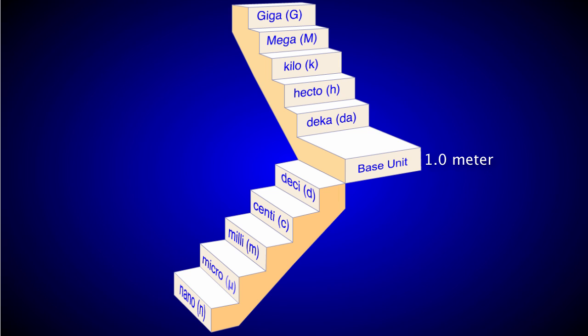Notice that each step has a specific prefix. Each of these prefixes can be associated with a specific number. For example, the prefix deca means 10. So a decameter will be equal to 10 meters. As you move up the metric staircase, length measurements increase by factors of 10. The prefix hecto means 100. So a hectometer would be equal to 100 meters.